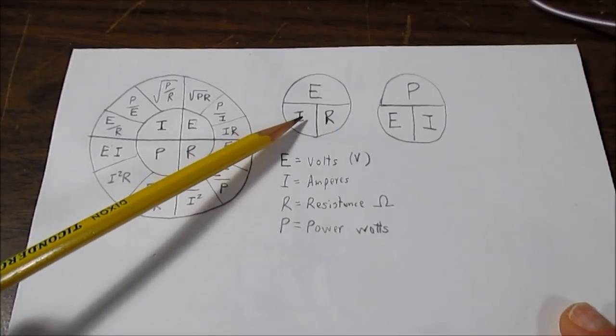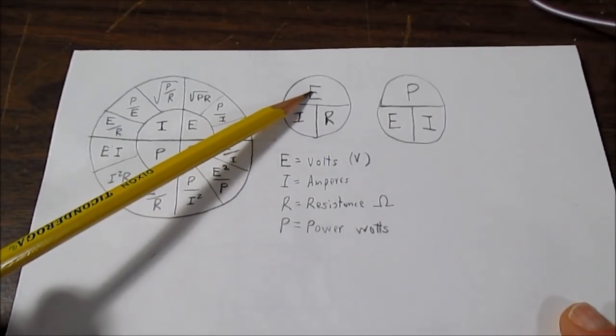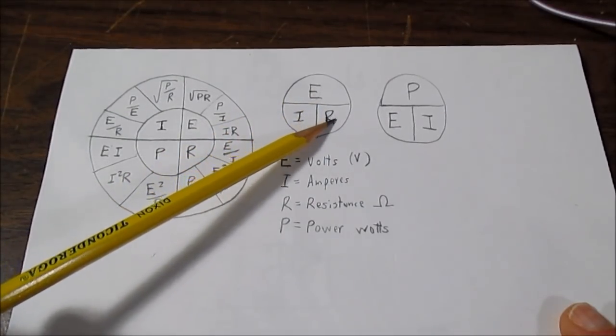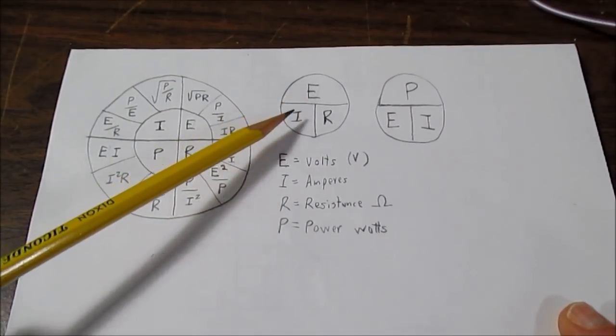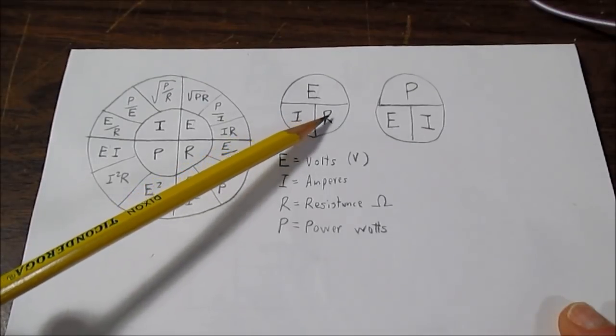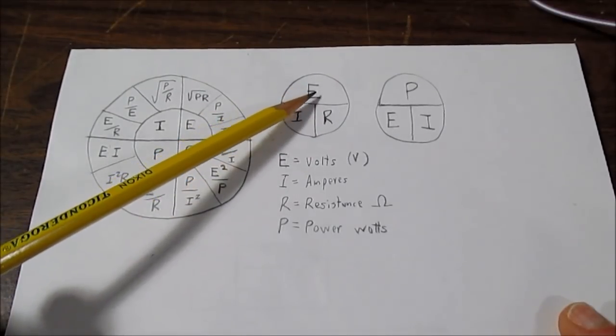Or if you're trying to find current, you take E divided by R, the resistance, to find current. And if you're trying to find the voltage, you take I times R and that gives you the voltage.